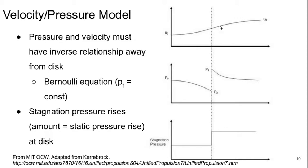And then on the downstream side, again, the velocity is increasing, the static pressure must be dropping. But the far upstream and the far downstream static pressures are both P0. So there must be a rise of static pressure across the disk.